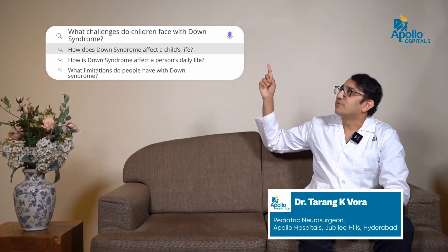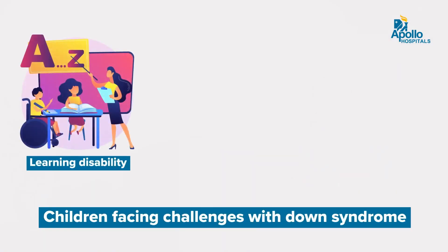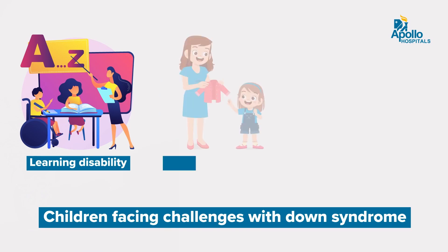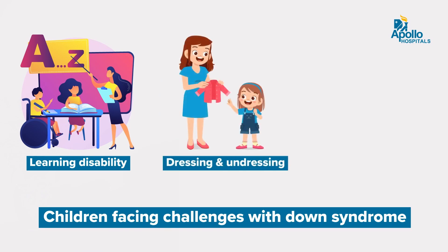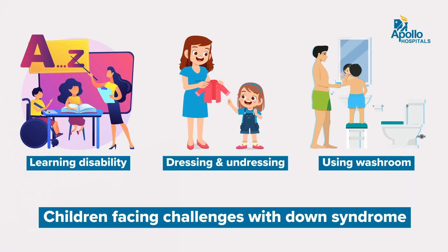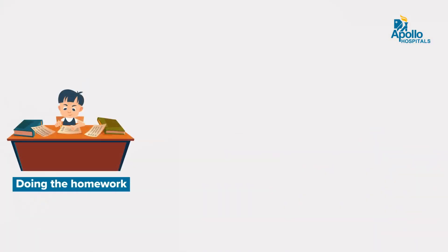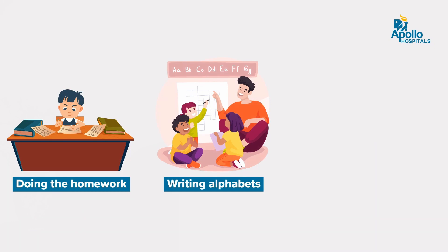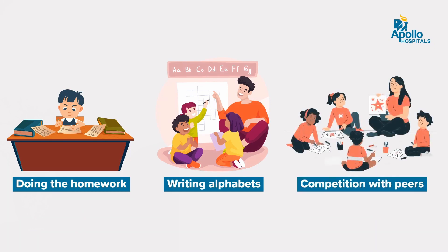What challenges do children with Down syndrome face? The most important challenge they face is that of a learning disability. They are unable to complete home tasks such as dressing themselves or going to the bathroom, which takes more effort from the parent. The second part is the schooling part, where doing homework or writing alphabets or keeping up with peers is also slightly slower in children with Down syndrome.